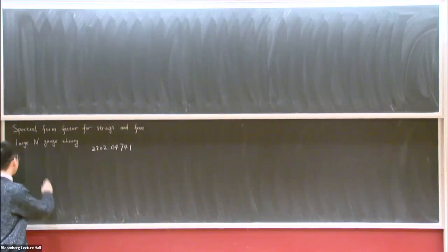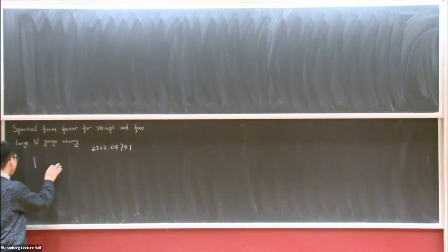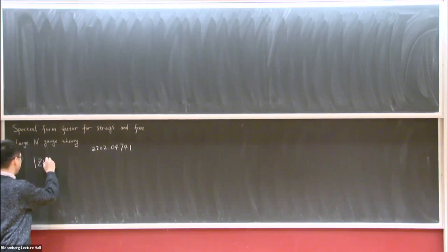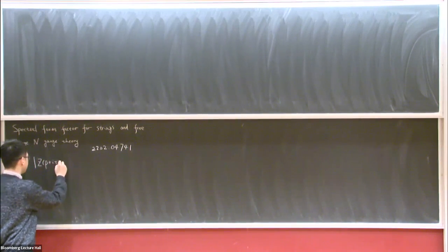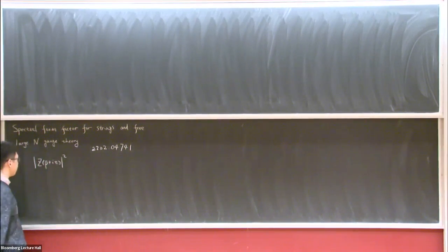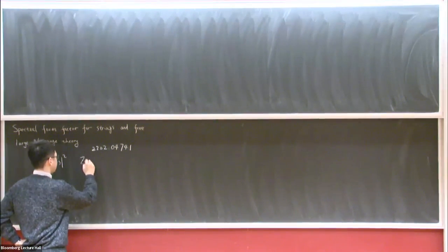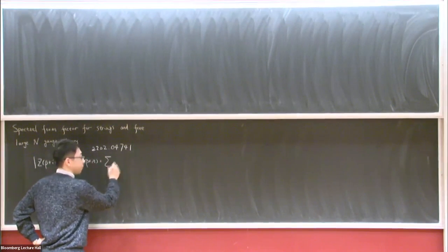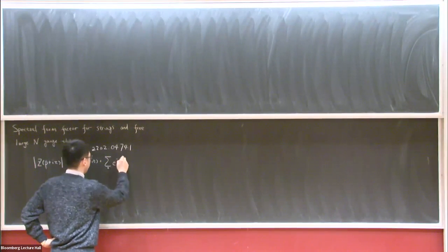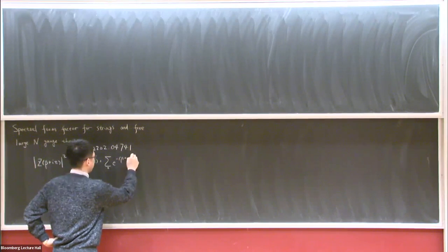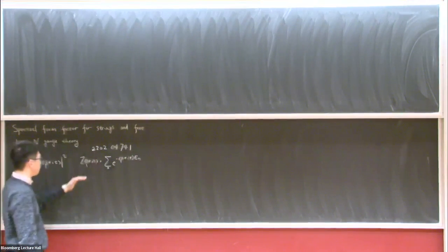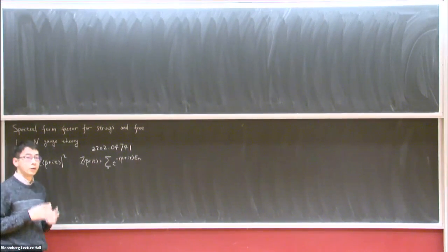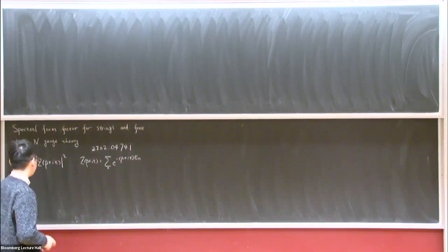The spectral form factor, as people usually define it, is the square of the analytically continued partition function. People write it as |Z(β + it)|², where Z(β + it) is just the sum over energy eigenstates of e^{-(β + it)Eₙ} — it's just an analytically continued partition function.